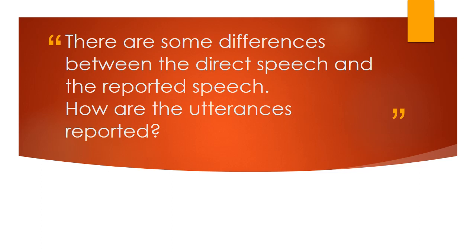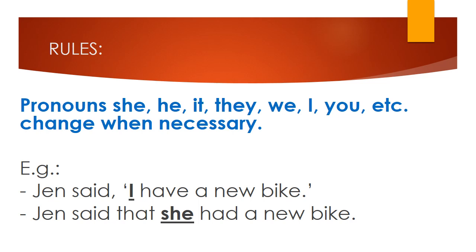As you can see, there are some differences between direct speech and reported speech. There are many rules we have to know. Pronouns like she, he, it, they, we, I, you, etc., change when necessary. For example, Jen said 'I have a new bike.' In reported speech it becomes: Jen said that she had a new bike. We can see that 'I' has changed into 'she' because 'I' in the first sentence means Jen, and 'she' in the second sentence also means Jen.